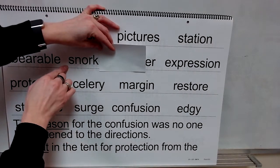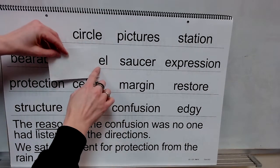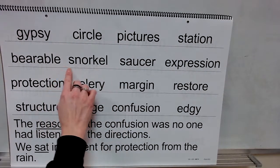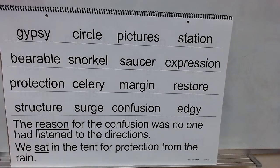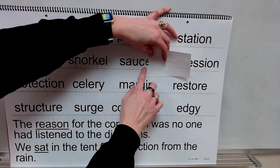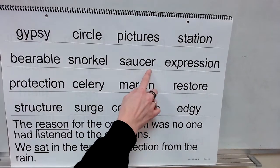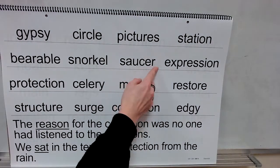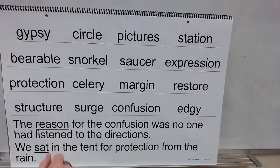Syllable: snork. Syllable: L. Adjust. What word? Snorkel. Snorkel. Base word: sauce. Drop the E. Add the suffix: er. Word: saucer.